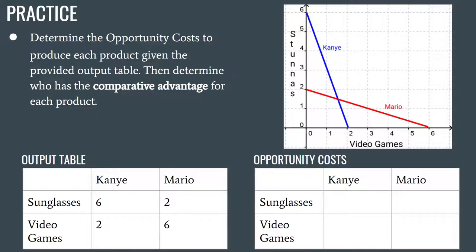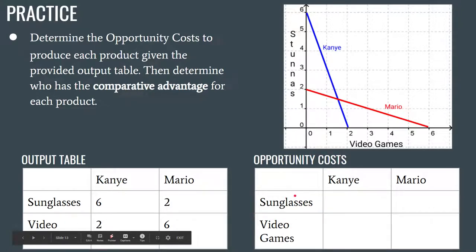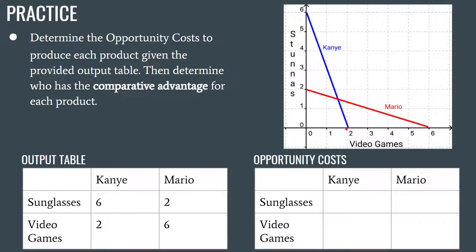The question is: what is Kanye giving up every time he produces a pair of sunglasses? Let's work with the graph. Say Kanye is producing two video games — he's at point two comma zero. He decides to start producing sunglasses and moves from two video games to one video game, shifting all that production toward sunglasses. At maximum efficiency, he moves up the y-axis to three pairs of sunglasses. So for every one video game given up, Kanye can produce three pairs of sunglasses.